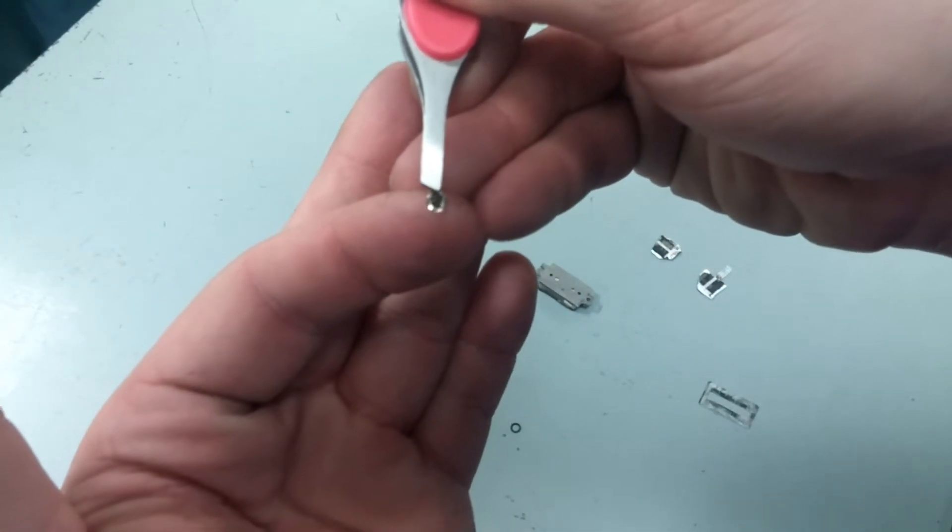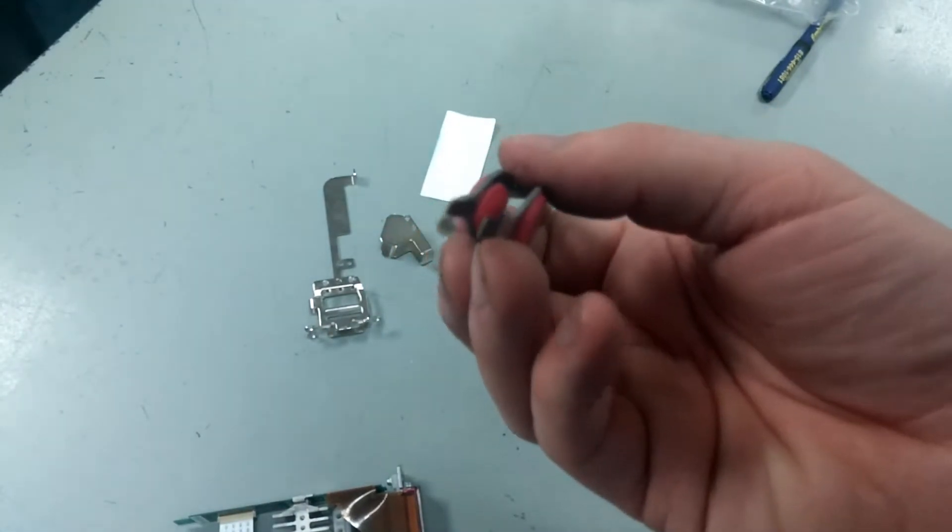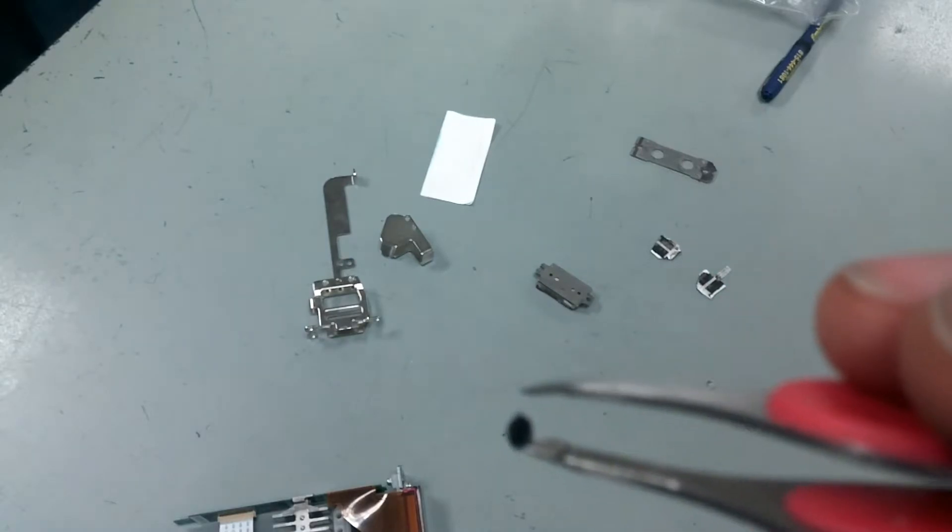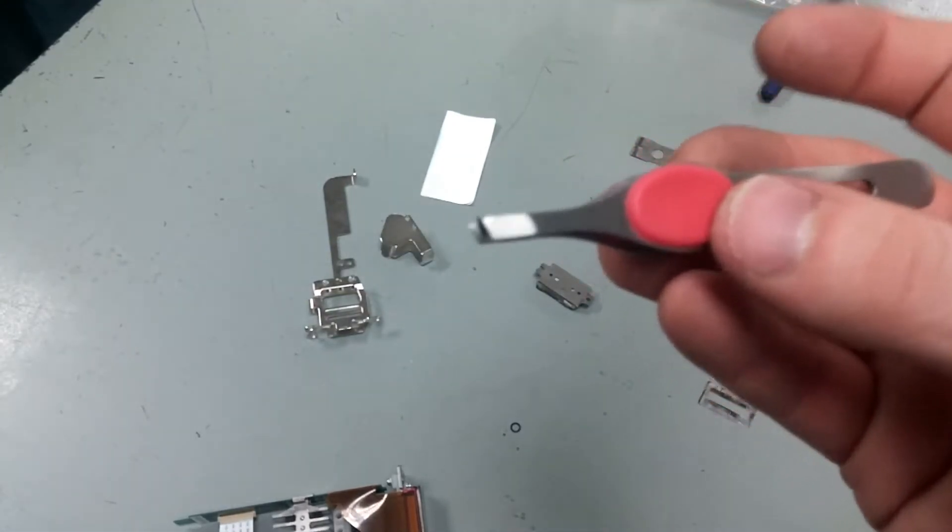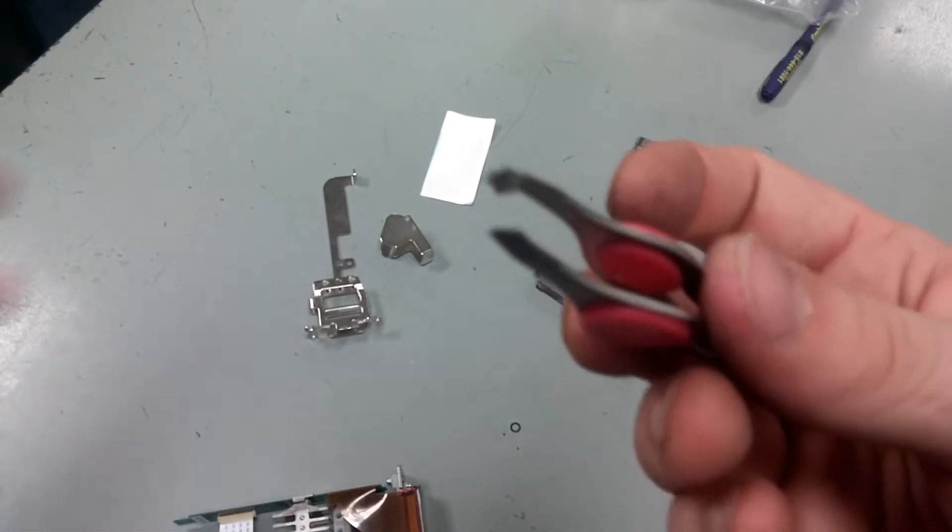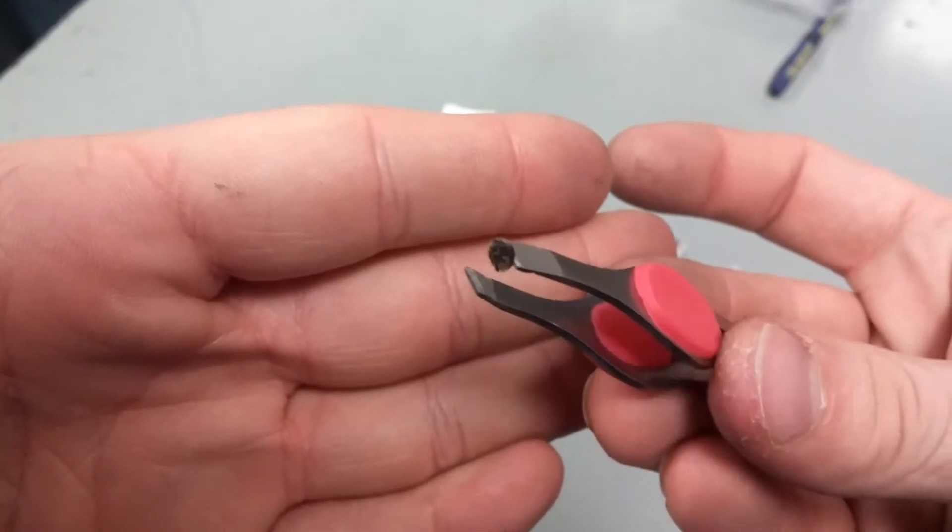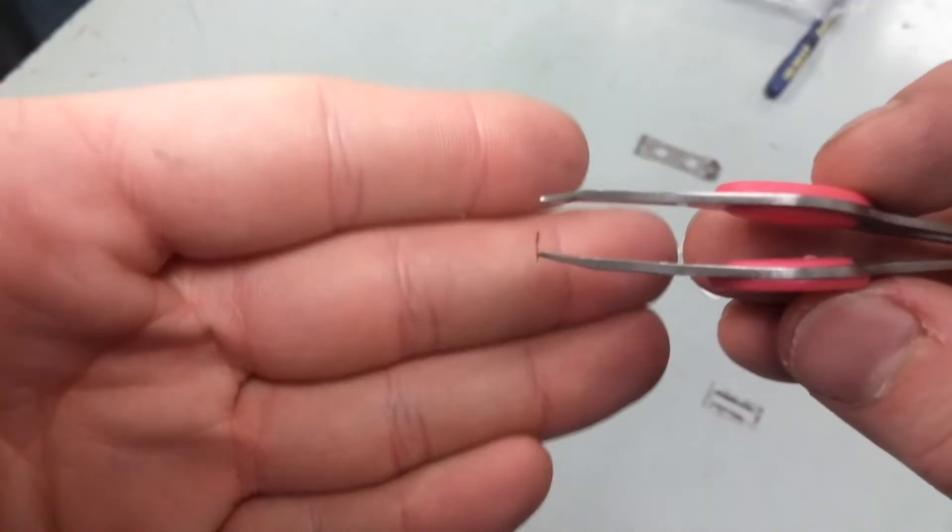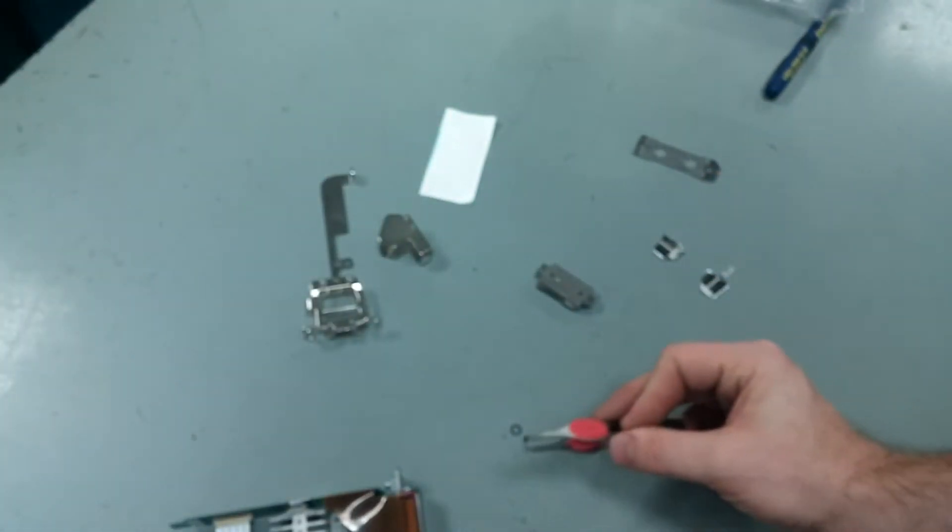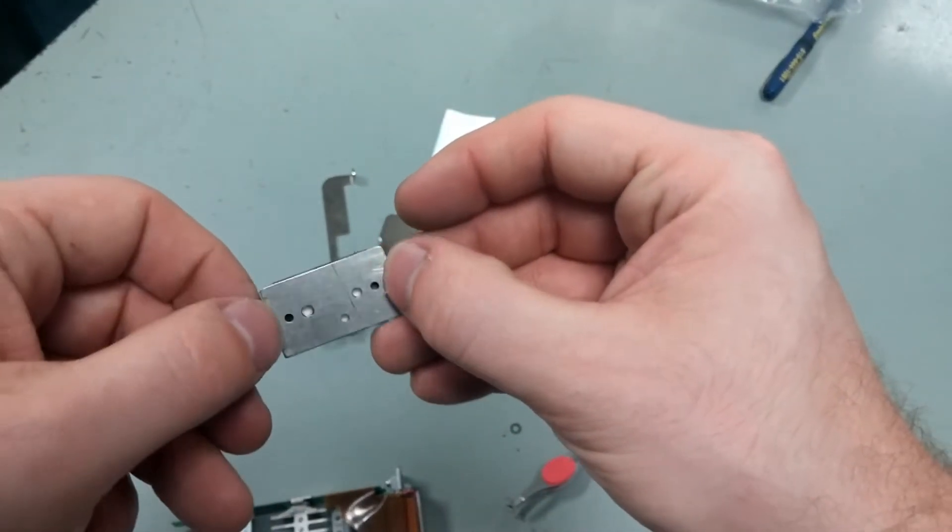And as you can see in this one, because this printhead died and then it got left alone, there's tons of buildup on it. This is one of the main failure points. As this filter gets clogged, cause it, all it is, is a tiny piece of absolutely thin metal. If this thing gets clogged, there is no ink flow into those two channels.